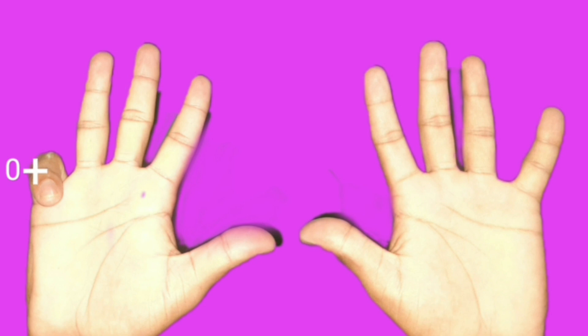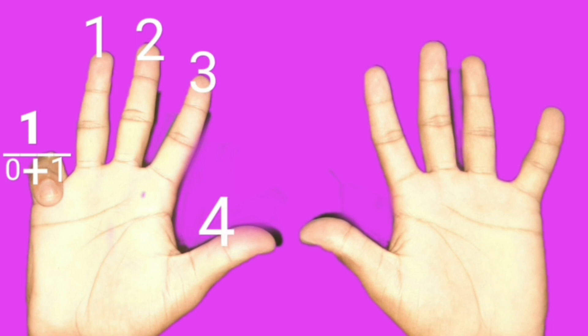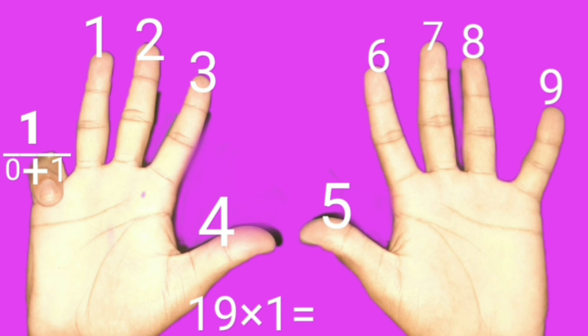Zero fingers are on the left side of the bent finger. Zero's next digit is 1. Zero plus 1 is 1. Now we count how many fingers are on the right side of the bent finger: 1, 2, 3, 4, 5, 6, 7, 8, 9. So left side 1 is there, right side 9 is there — that gives us 19.